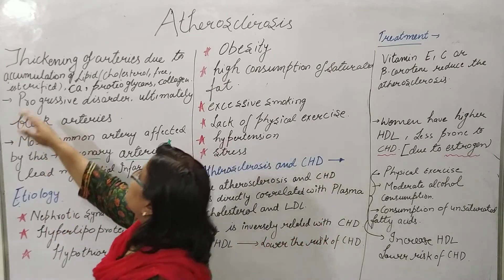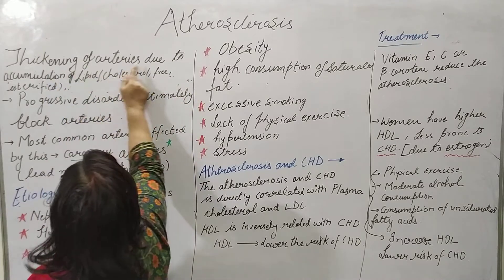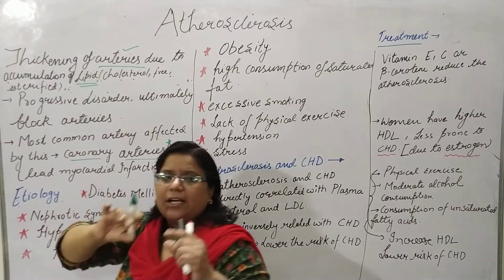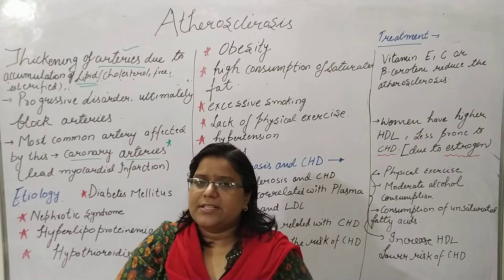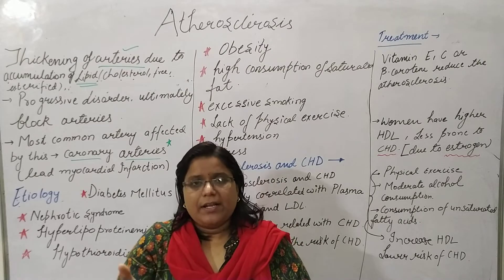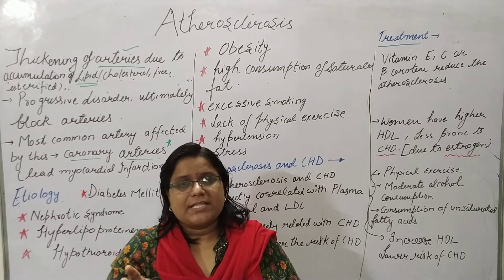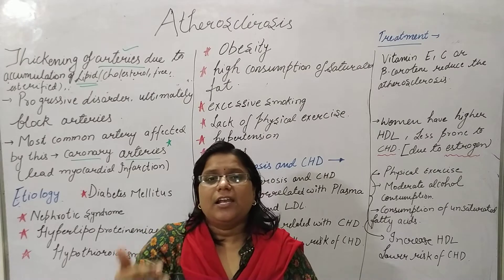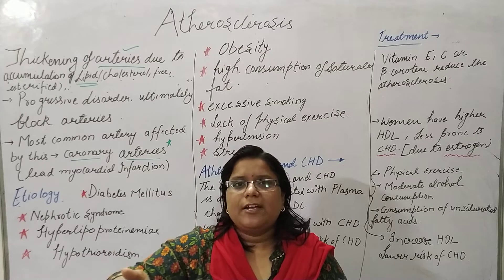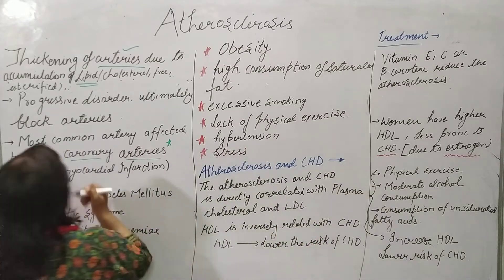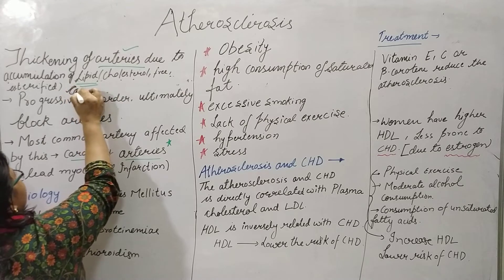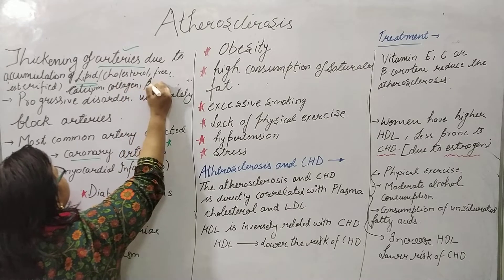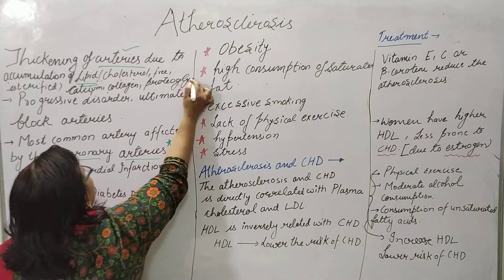The definition: atherosclerosis is a thickening of the arteries due to the accumulation of lipid. Lipid occurs in three basic forms: free form lipid, esterified lipid, and cholesterol form. Other substances also deposit in the arteries, such as calcium, collagen fibers, and proteoglycans.